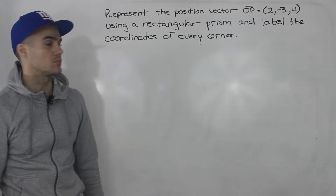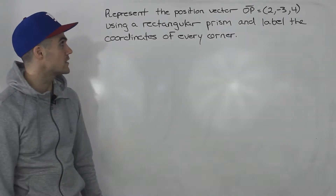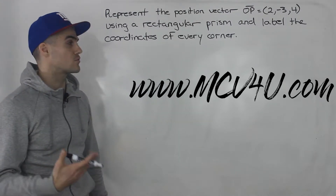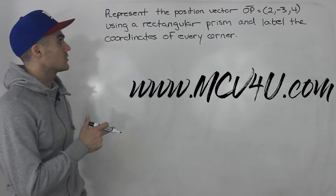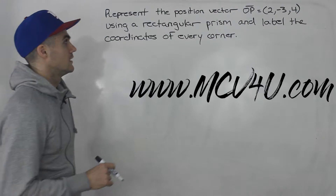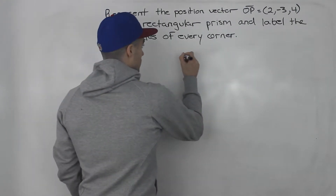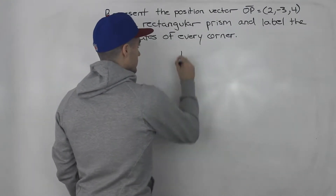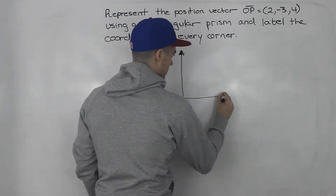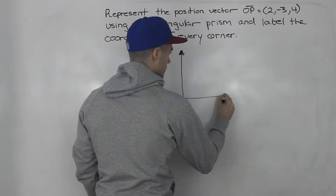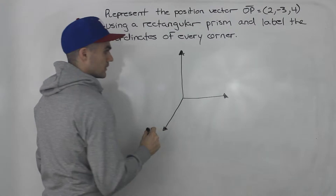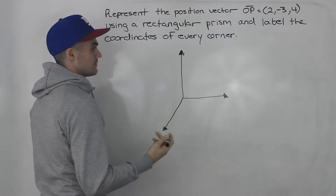Hey, what's up everybody? Welcome back, Patrick here. Moving on to the next question: we have to represent the position vector OP equals (2, -3, 4) using a rectangular prism, and we have to label the coordinates of every corner. Graphing these 3D vectors can sometimes be a pain, so I'm going to try to go through fairly quickly but still in as much detail as possible.